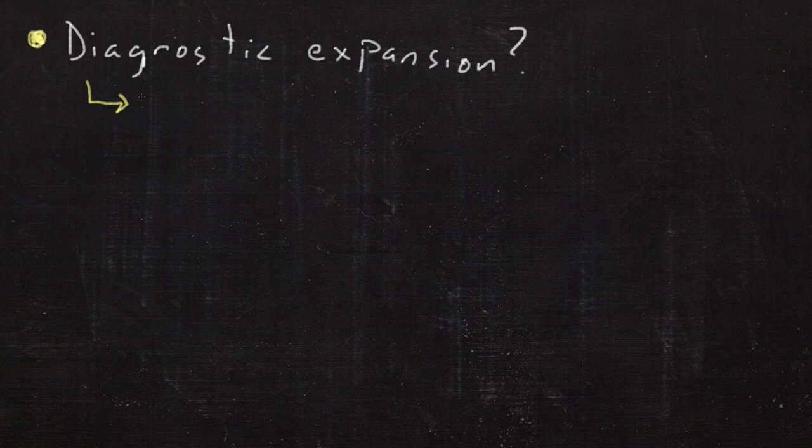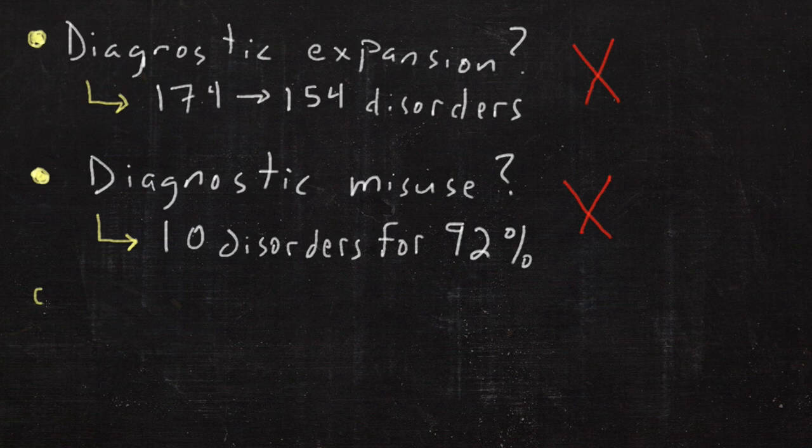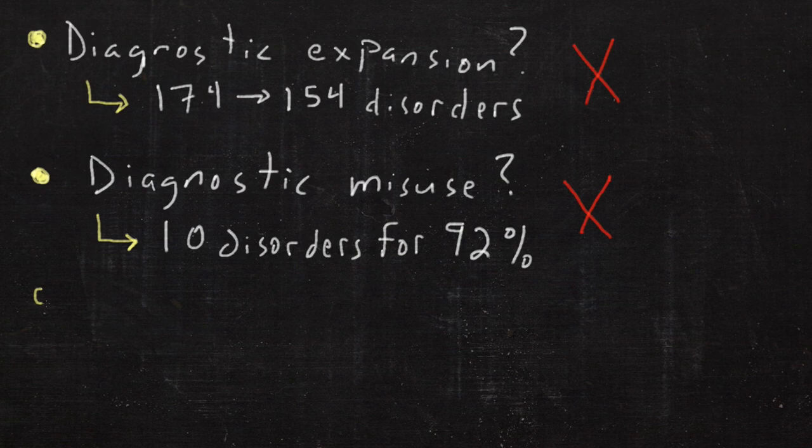So is there diagnostic expansion? Well, with a loss of 20 diseases, seems not to be the case. Is there diagnostic misuse? Well, if only 10 disorders were used for 92% of 58 million people, that doesn't seem pretty plausible either. Is there medication overuse? Well, the effect size of psychiatric medications is greater than for general medical medications. So sorry, Dr. Francis, you're simply wrong in the facts.